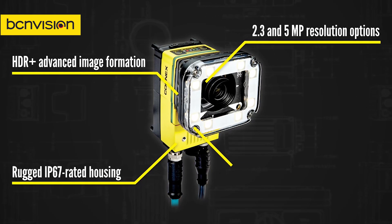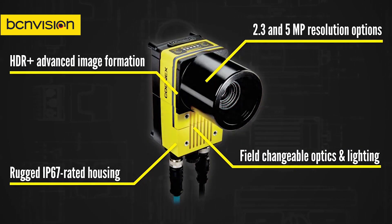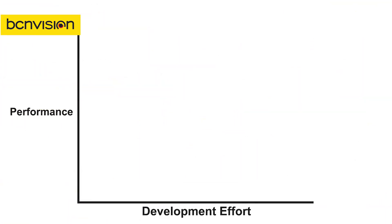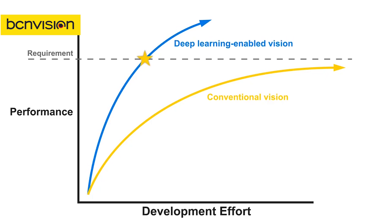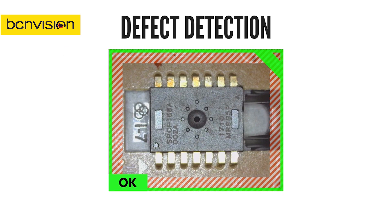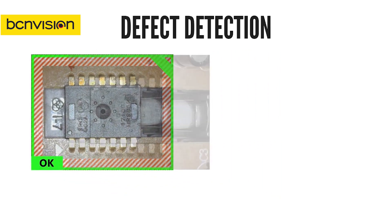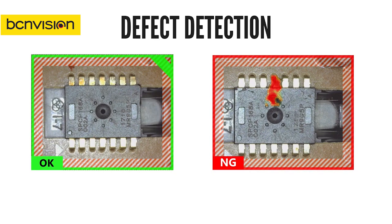Field-changeable lighting and optics provide users with ultimate flexibility to customize the system for their application. Example-based deep learning allows users to automate inspections not feasible with standard, rule-based machine vision. Applications like defect detection can be programmed using only good read images, drastically reducing the setup time needed to get the system up and running. Because the training models use multiple images, Vidi can handle variations in the targets, as well as changes in lighting and camera perspective.